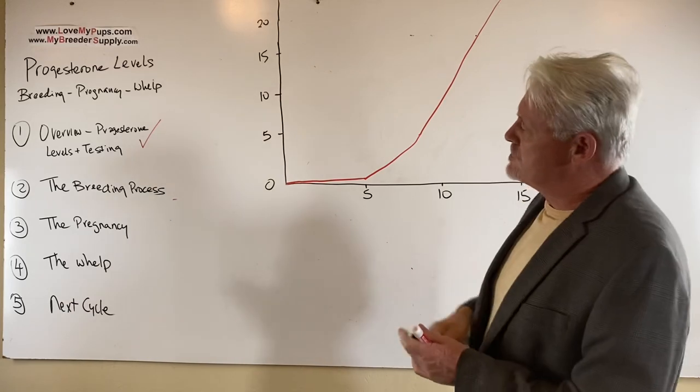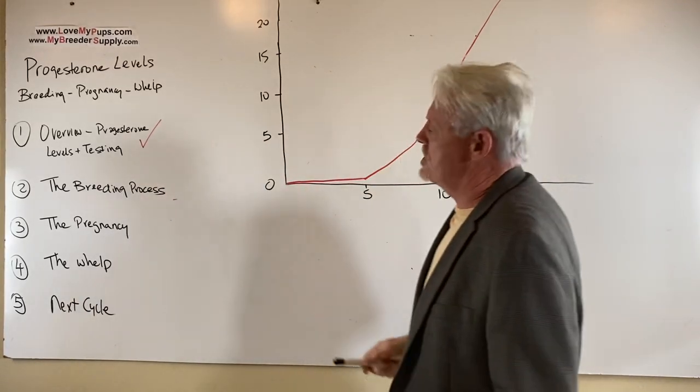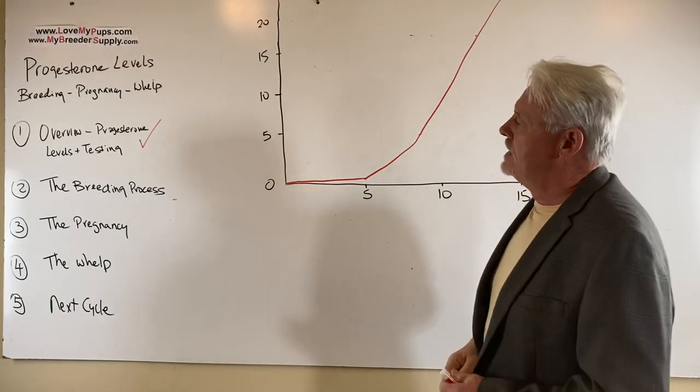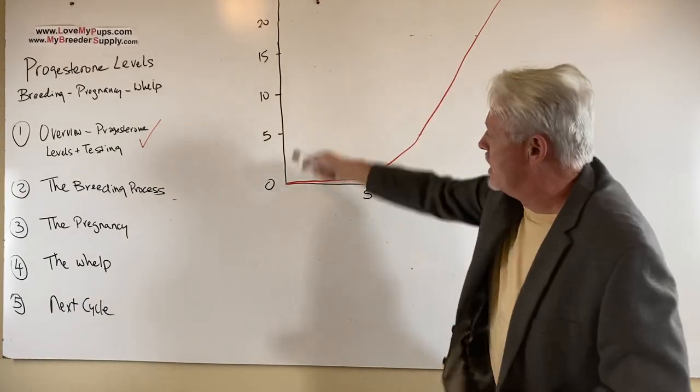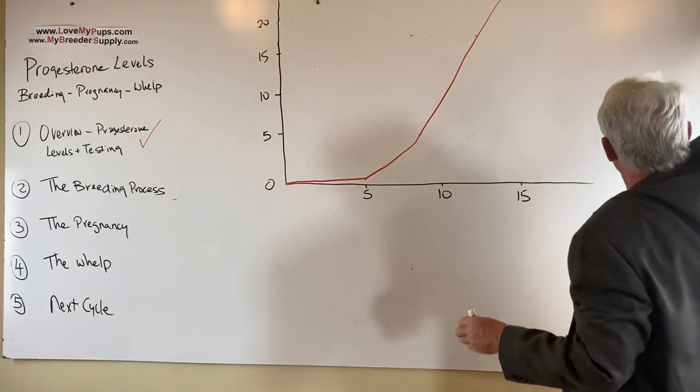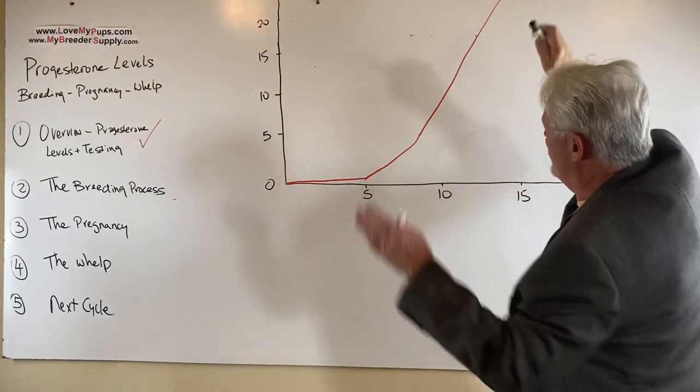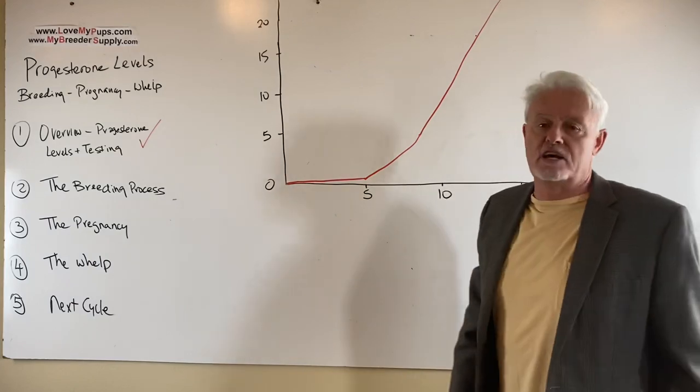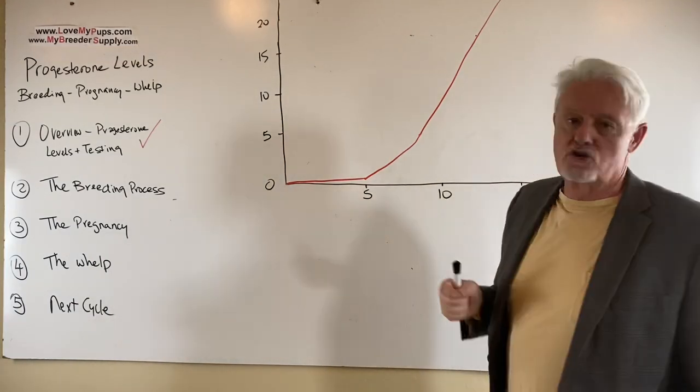Okay, so the previous one, we did an overview of what the progesterone curve looks like, and now we're going to talk about the beginning part of the progesterone curve. Remember, the back end of this is high up here and goes past off screen to where we're going to have wealth. We're talking about the first 15 days to the first 20 days of a dog that's in heat.